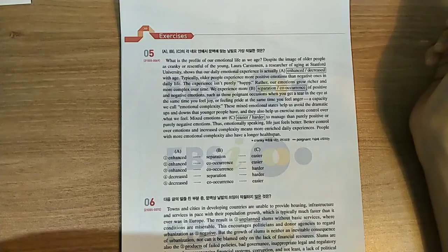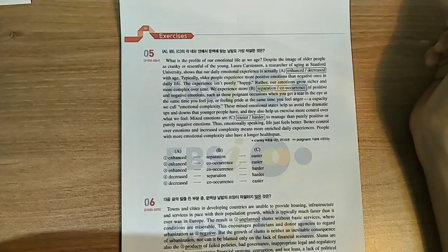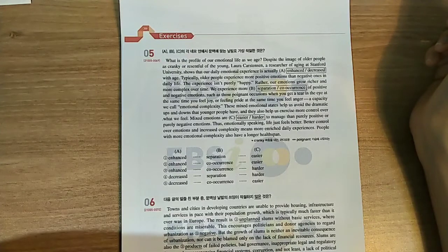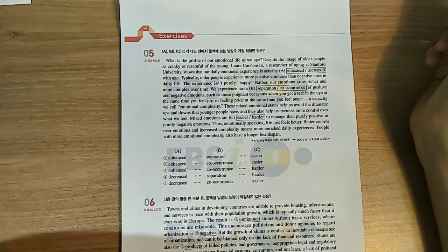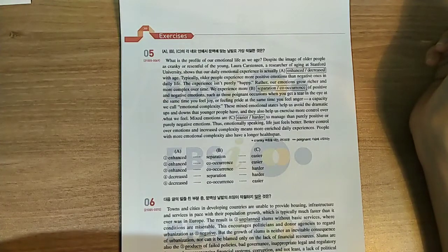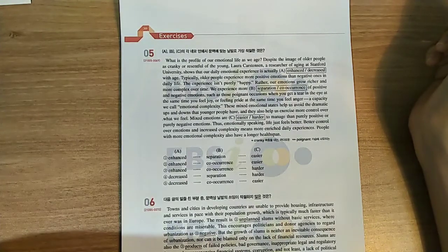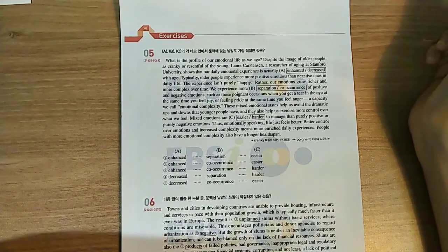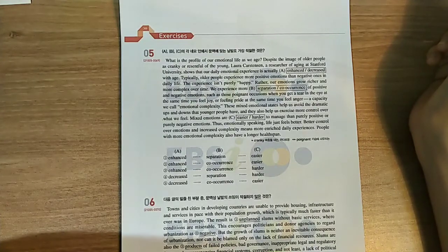The experience isn't purely happy. Rather, our emotions grow richer and more complex over time. We experience more co-occurrence of positive and negative emotions, such as those poignant occasions when you get a tear in the eye at the same time you feel joy, or feeling pride at the same time you feel anger, a capacity we call emotional complexity. This mixed emotional state helps us avoid the dramatic ups and downs that younger people have, and they also help us exercise more control over what we feel.